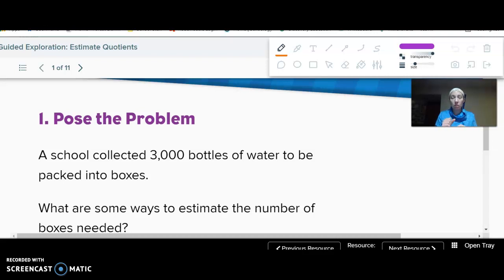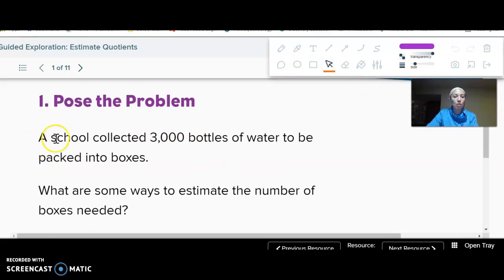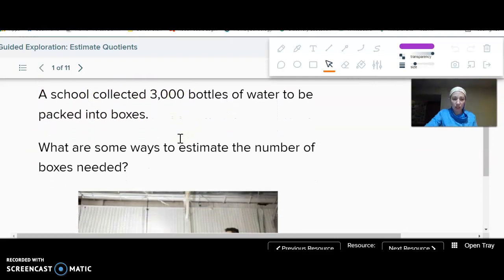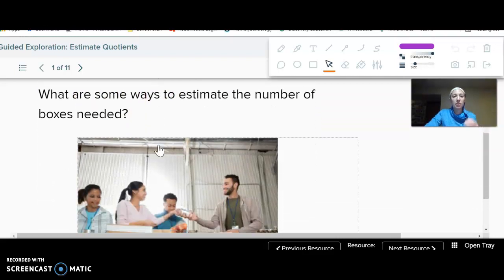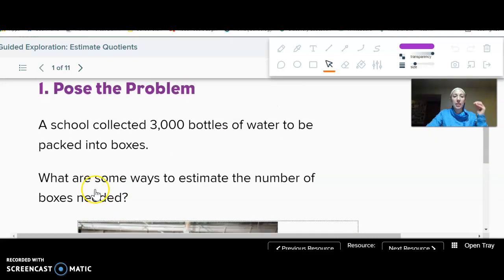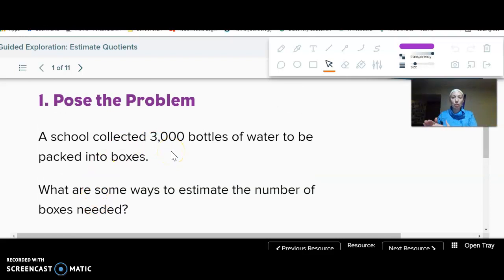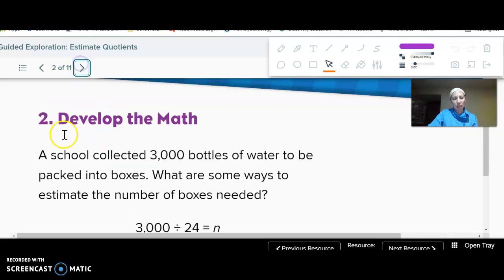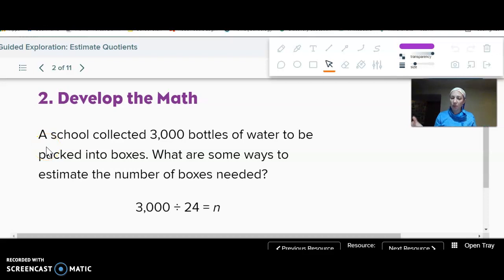So remember, we use estimating or rounding to figure out if the answer I got makes sense and also to predict what do I think this answer is going to be closest to, or just to figure out about how much I need because I don't always need an exact answer. So the problem we'll be looking at: a school collected 3,000 bottles of water to be packed into boxes. What are some ways to estimate the number of boxes needed? Now notice each box holds 24. So I'm taking 3,000, I'm splitting them up into groups of 24. That's what makes it a division problem. So how can we estimate 3,000 divided by 24?